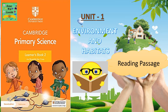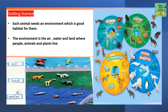Unit 1: Environment and Habitats — Reading Passage. Each animal needs an environment which is a good habitat for them. The environment is the air, water, and land where people, animals, and plants live.